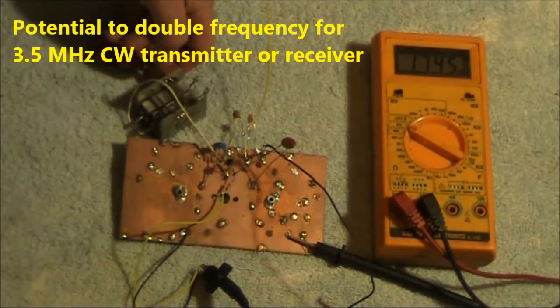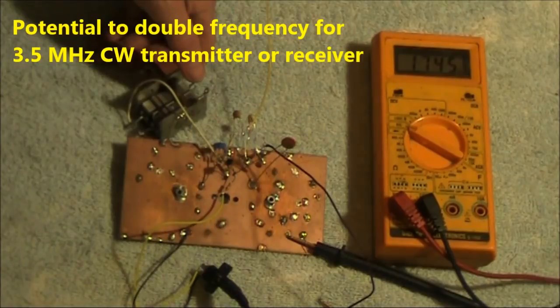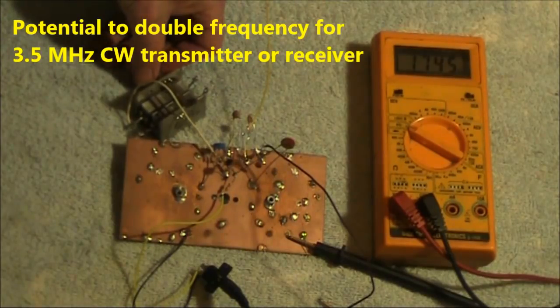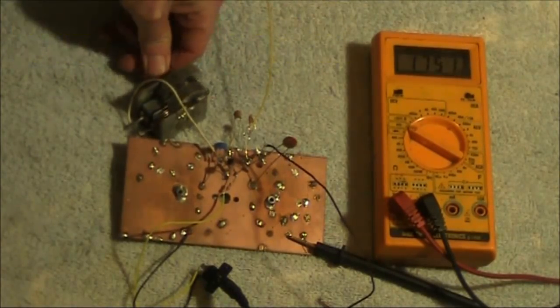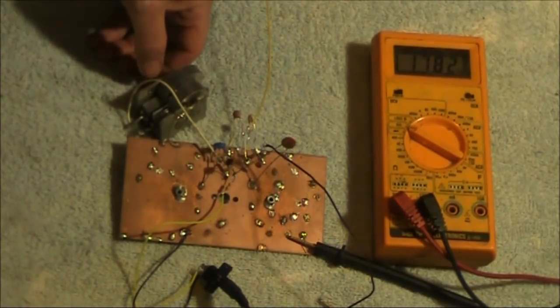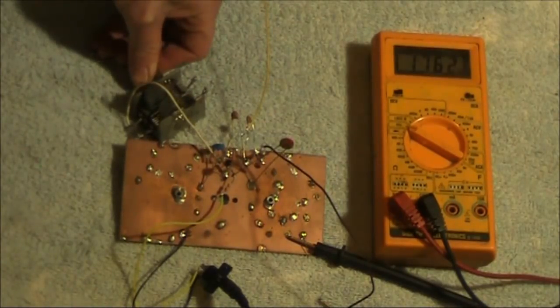Another possibility is you could double its frequency to get you on to 80 metres. For instance, for a CW transmitter. In this case, double 1745 is 3490, so just below the band limit. And up here, 1782, is 3564. So, you are covering quite a large portion of the CW end of 80 metres.